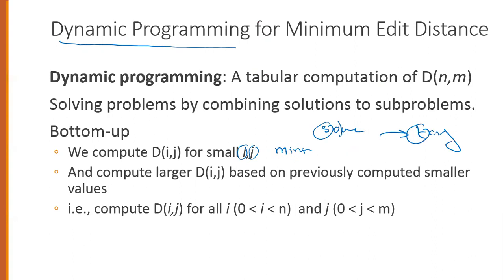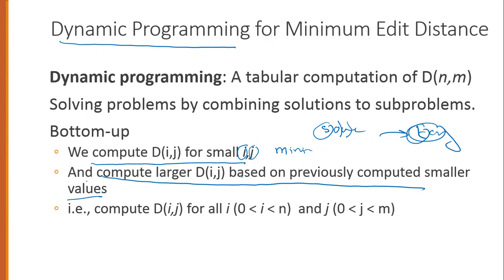Then we will move from smaller source-to-target transformations to more characters. We will compute D[i,j] for small i and j, and compute larger D[i,j] values based on previously computed smaller values, because the next transformation is the larger substring transformation. We will look at the previous computed values and see which one is smaller.